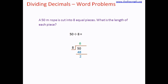So 50 divided by 8: 8 sixes are 48, the remainder is 2. Now we know that we don't need to stop here when the remainder is 2. We can continue to divide until we get the remainder as 0. So what we do here is write the decimal point and a 0 after 50 and continue the division. Since the whole number part of the division is done, we write the decimal point in the quotient and bring down this 0.